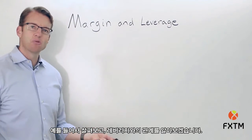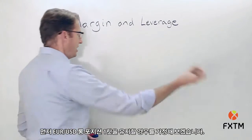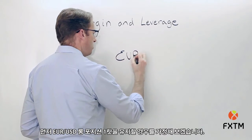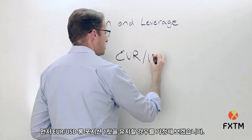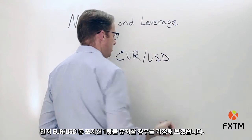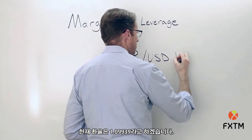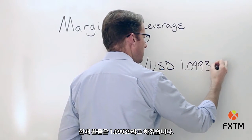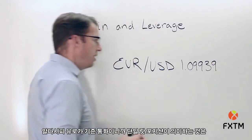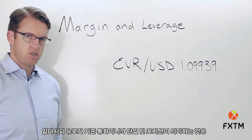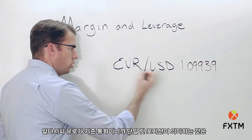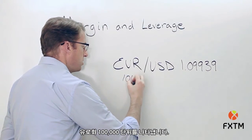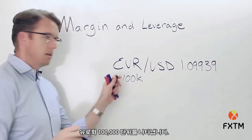Let's look at an example and we'll see how it relates to leverage. Let's assume that a trader is looking at holding open a one lot long position on the euro to the US dollar. Let's say the current exchange rate was 1.09939. A single lot position means that because the euro is the base currency, this represents 100,000 units of the euro.